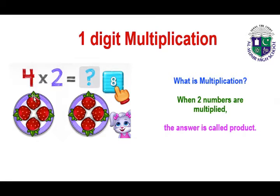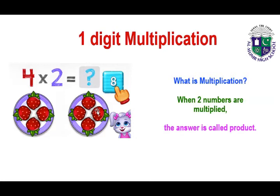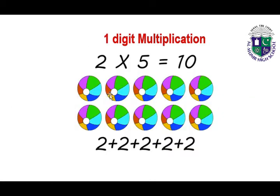When we add these four and these four strawberries, we get the answer eight. Count: four, five, six, seven, eight. So four multiply by two means we have to add four two times, and the answer is eight. We call the answer in a multiplication question the product.